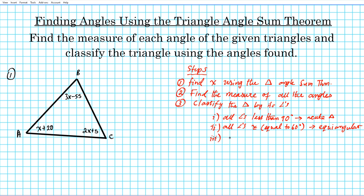Next case: if one of the angles is equal to 90 degrees, that's called a right triangle. And lastly, if one angle is greater than 90, then it's automatically an obtuse triangle.